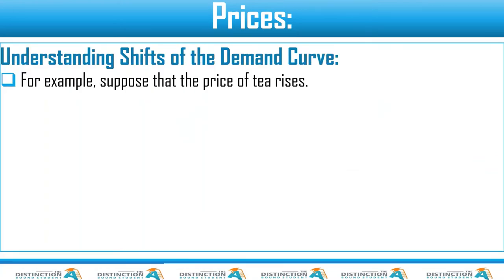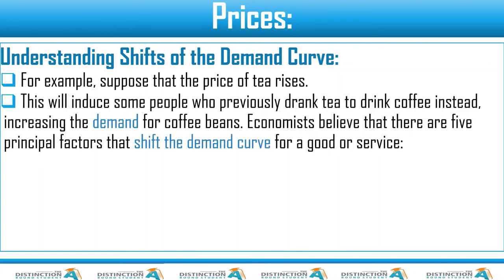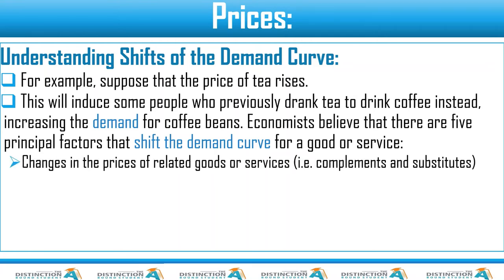For example, suppose the price of tea rises — this will induce some people who previously drank tea to switch to coffee, increasing the demand for coffee beans. Economists believe there are five principal factors that shift the demand curve for a good or service. The first one is a change in the price of a related good or service. Is the good a complement? Is the good a substitute? This can be a factor that influences the shifting of a demand curve when something happens to the other good. We call that cross elasticity of demand — you will learn more about it.